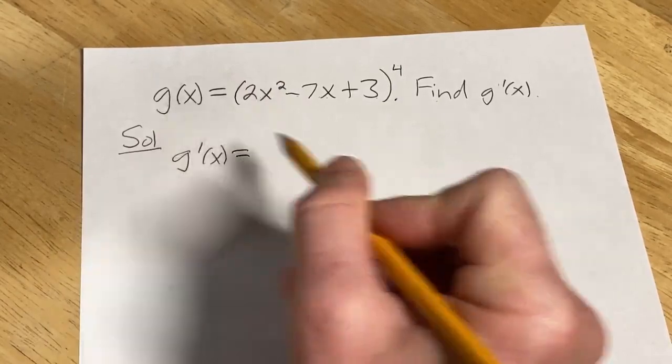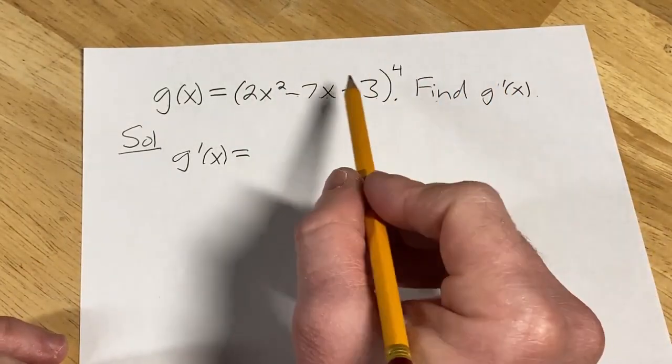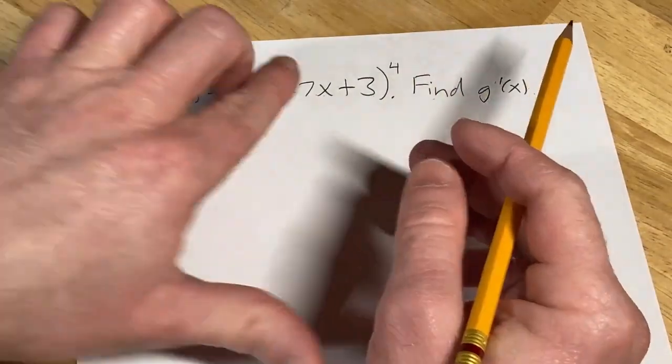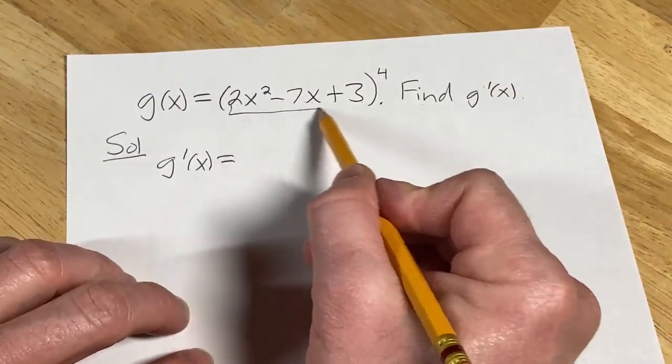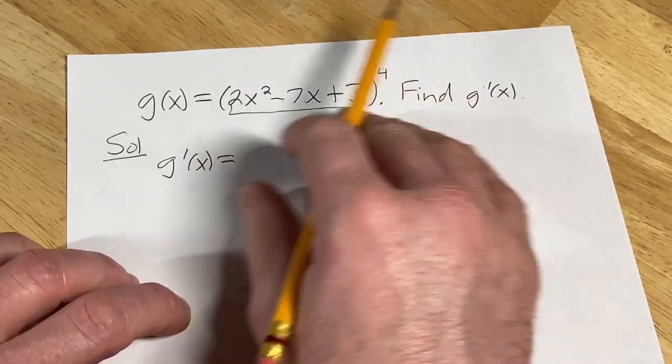We're going to use something called the chain rule. The chain rule says when you have something like this, where you have a function—this is our inside function—being raised to a power, you basically take the derivative of the outside function, which in this case would be like x to the fourth power.